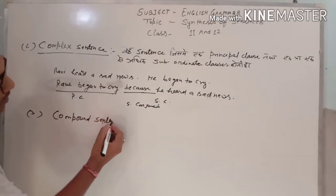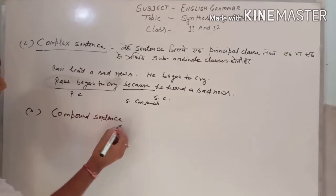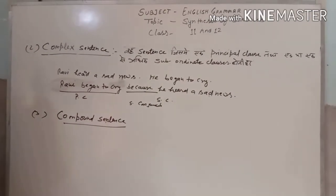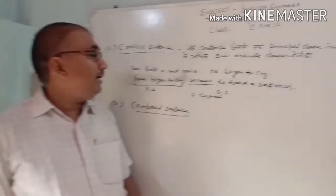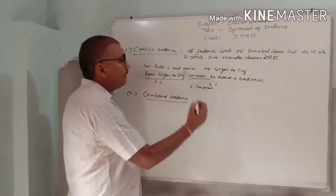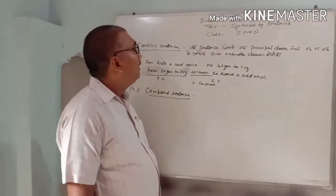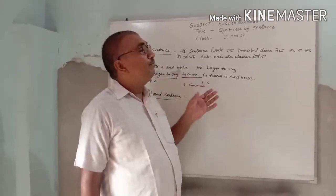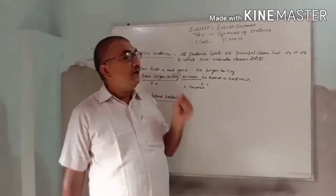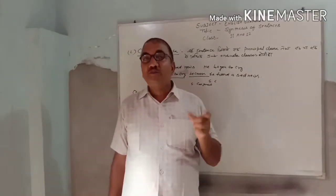Next is the compound sentence. In a compound sentence, there is a principal clause joined with one or more coordinate clauses using a coordinating conjunction.